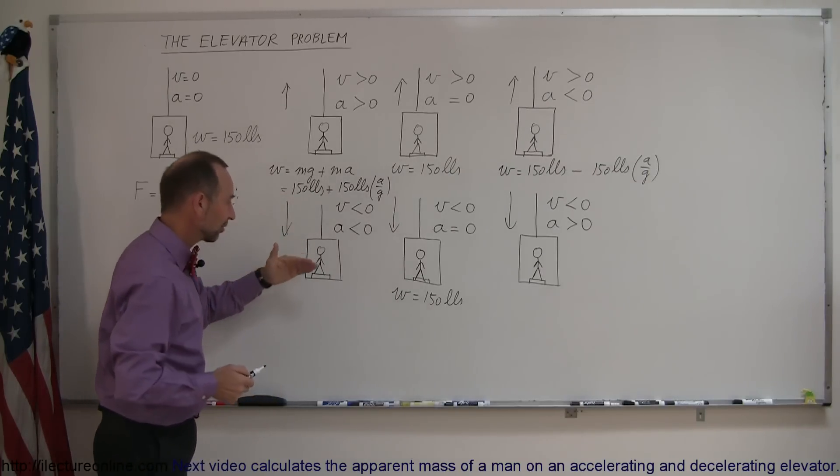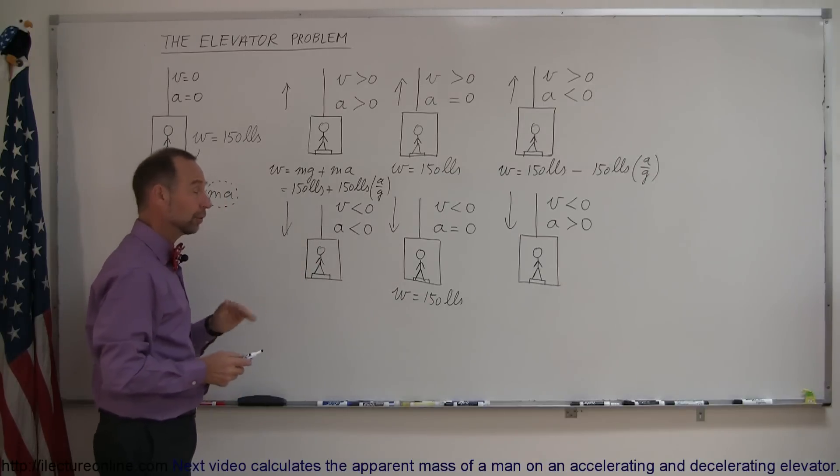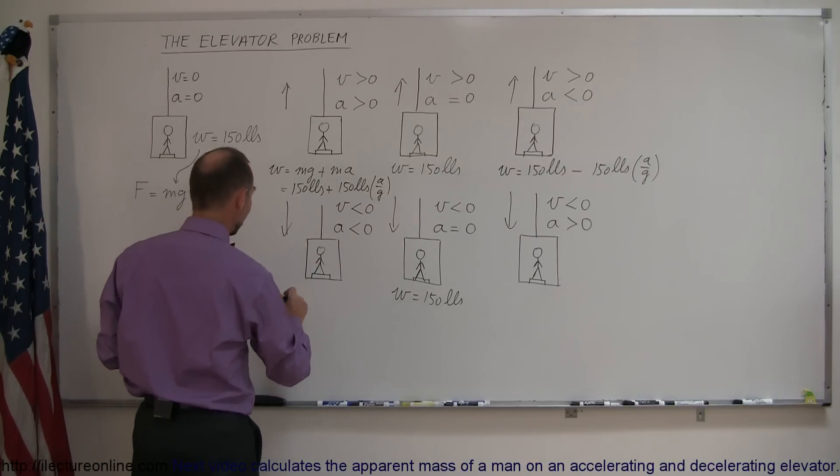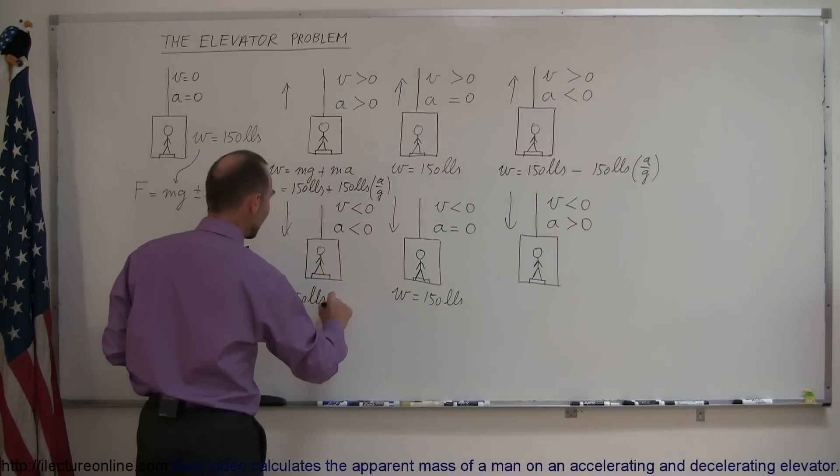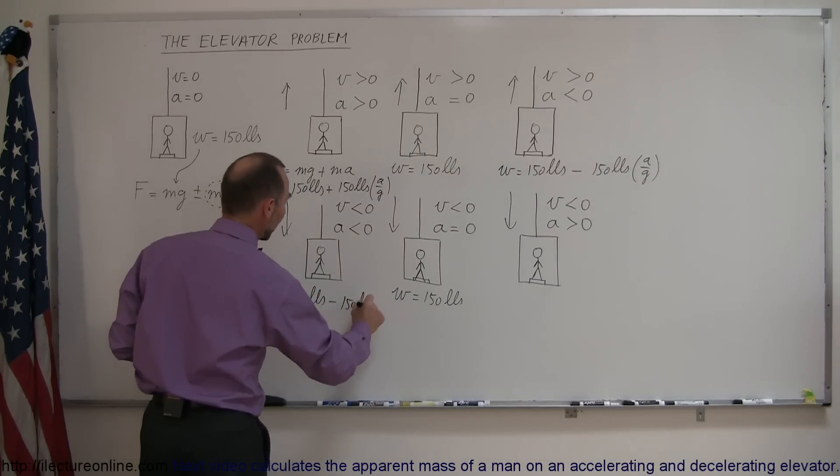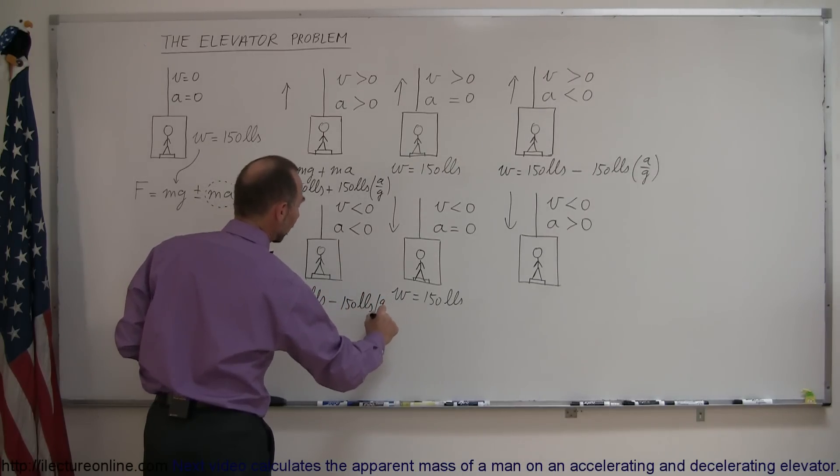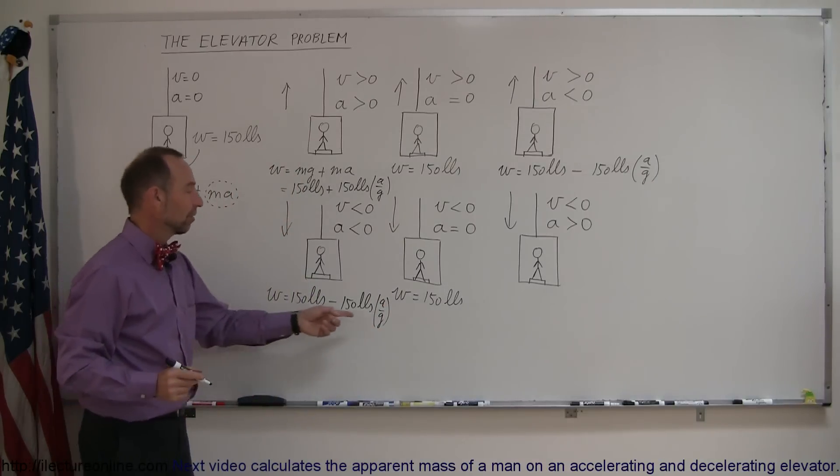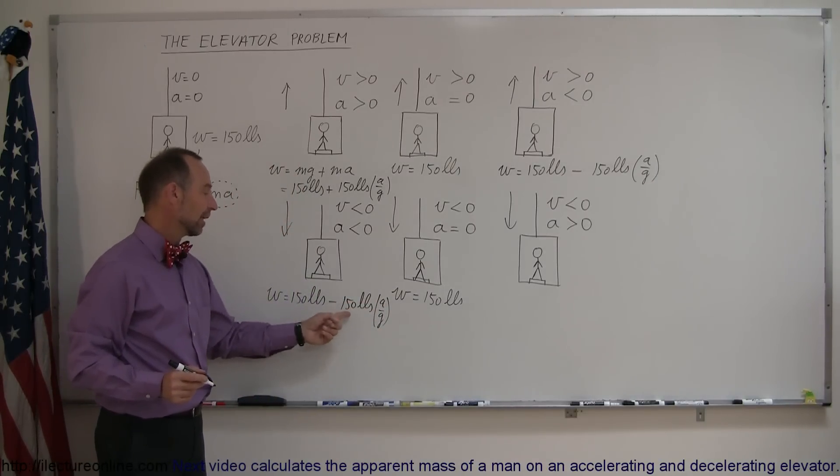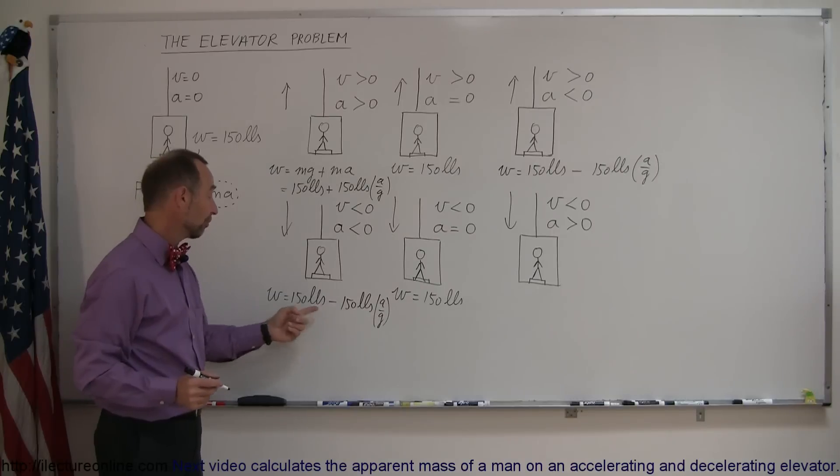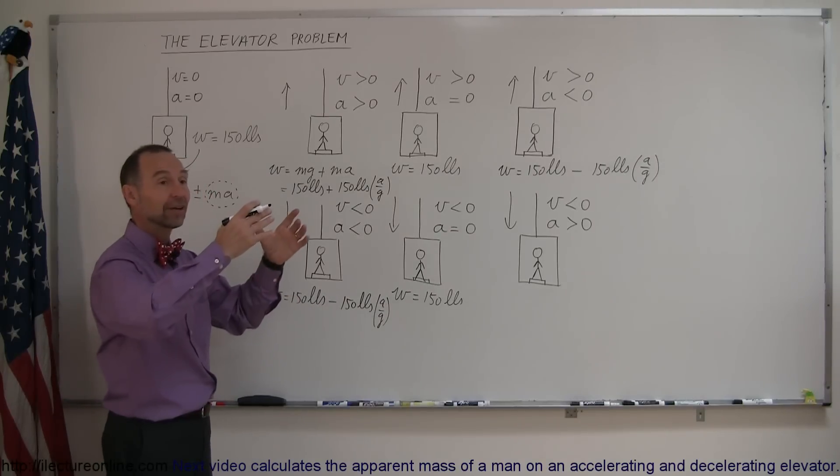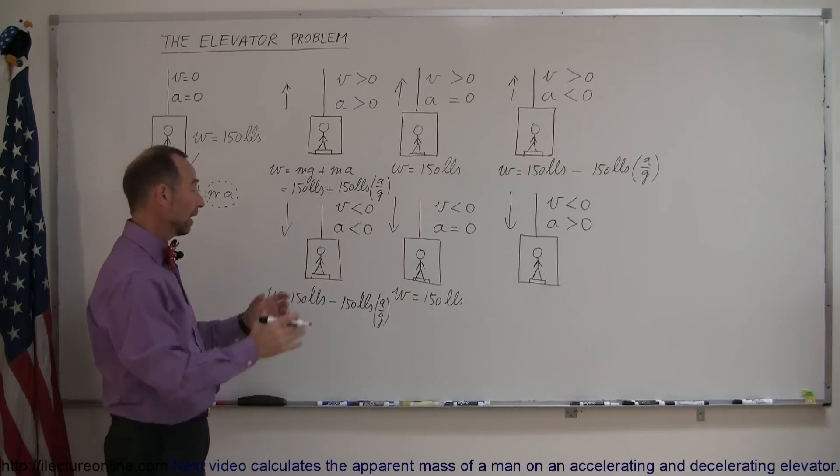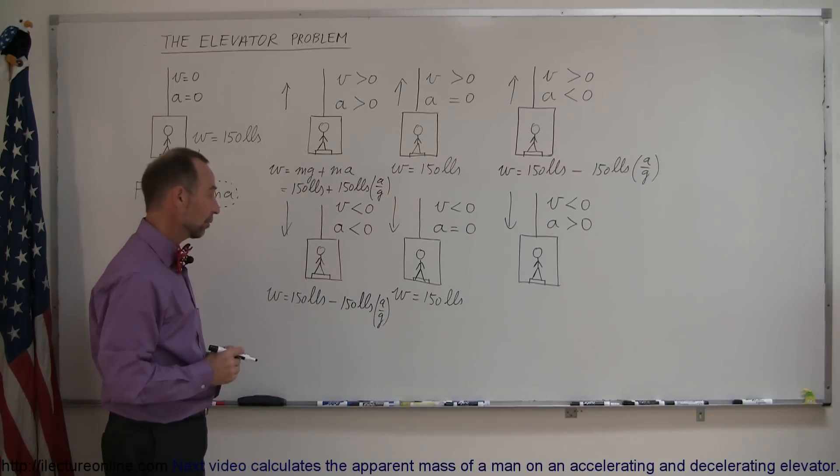Over here, when the elevator is accelerating downward for the moment, you would feel like as if you're lighter. So the weight here is equal to 150 pounds minus the person's weight times the ratio of a over g. Let's say that a is 10 percent of g, then this would be 15 pounds and the person would feel 15 pounds lighter as the elevator is beginning to move and so beginning to accelerate in a downward direction.